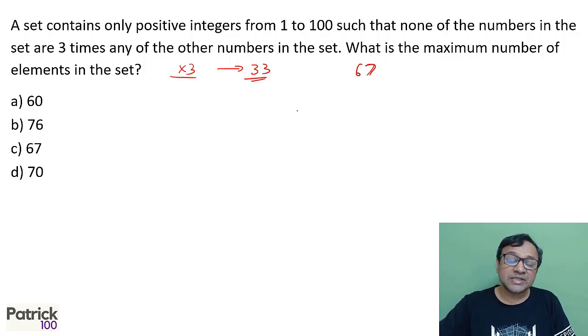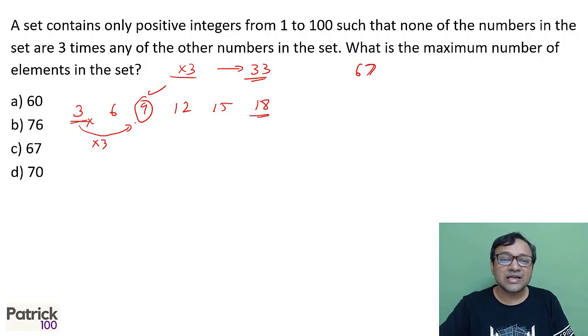But we will be tempted to mark 67, but 67 is not the answer. In this, multiples of 3 which is 3, 6, 9. And since 3 is not there we can include 9. Same way 18 is 3 times 6. Since 6 is not there we can include 18. That means we can include multiples of 9. How many multiples of 9 are there?